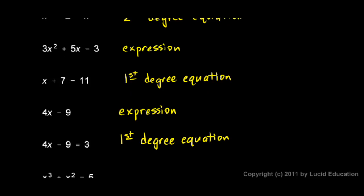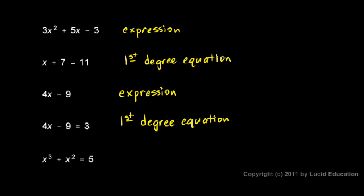And there's one more down here. x cubed plus x squared equals 5. Well, this is an equation. You see the equal sign there. We have an x cubed and an x squared. So is this a second degree equation or a third degree equation?